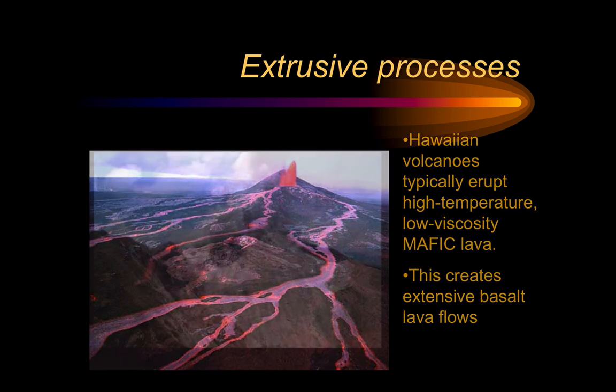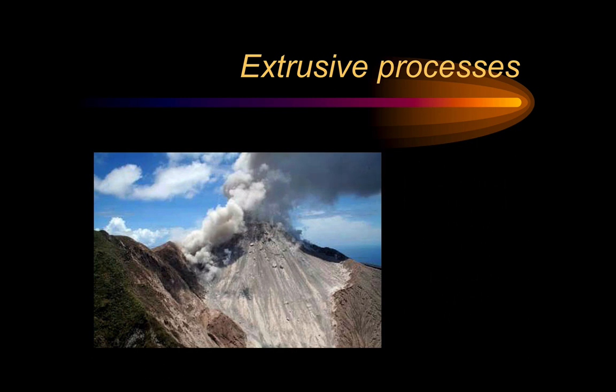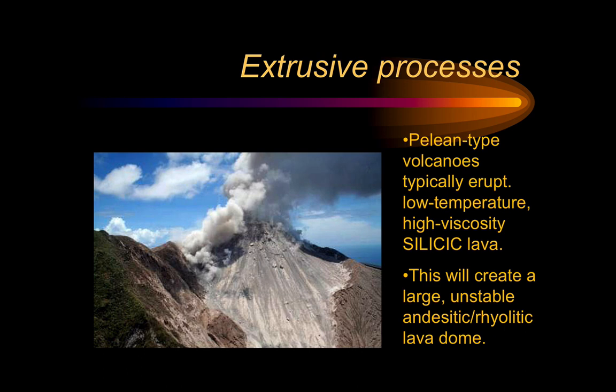This contrasts quite sharply with volcanoes that have a more silicic or silica-rich composition. This is a Peléan type volcano. The lava being erupted here is very different — it's a different colour, but crucially it's lower temperature and much higher viscosity. This is a silicic or intermediate magma. The lava here is hardly flowing anywhere; it's building a large, very unstable lava dome.